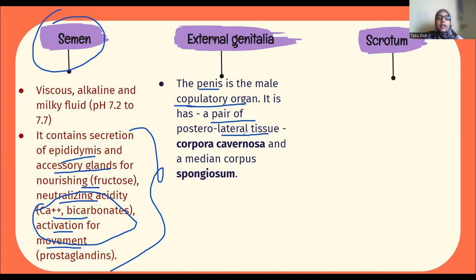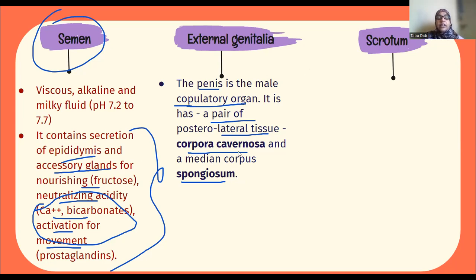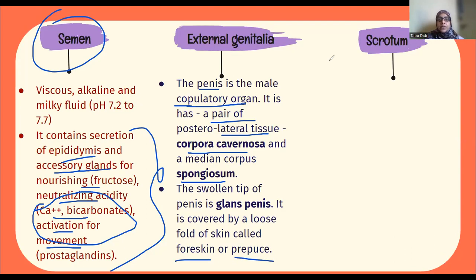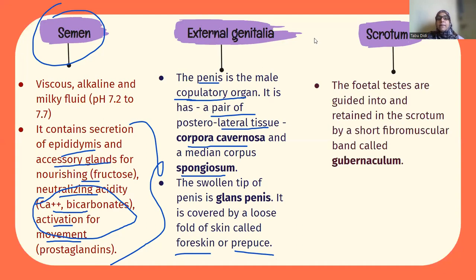The penis has a lateral posterior tissue facing toward the back and side — this is the corpora cavernosa — and a middle layer called the corpus spongiosum. The tip of the penis is known as the glans penis, and it has a covering — a loose fold of skin called the foreskin or prepuce. The scrotum is the pouch or bag in which the testes are held, properly positioned, and protected.